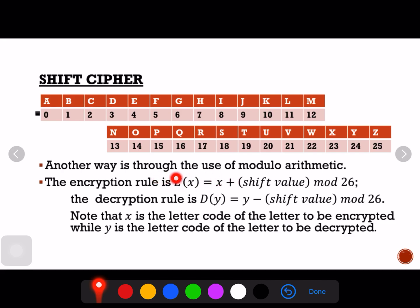Let's start with encryption rule first. The encryption rule says that if we are to encrypt letter x, we just have to get the letter code of x and add whatever the shift value is.